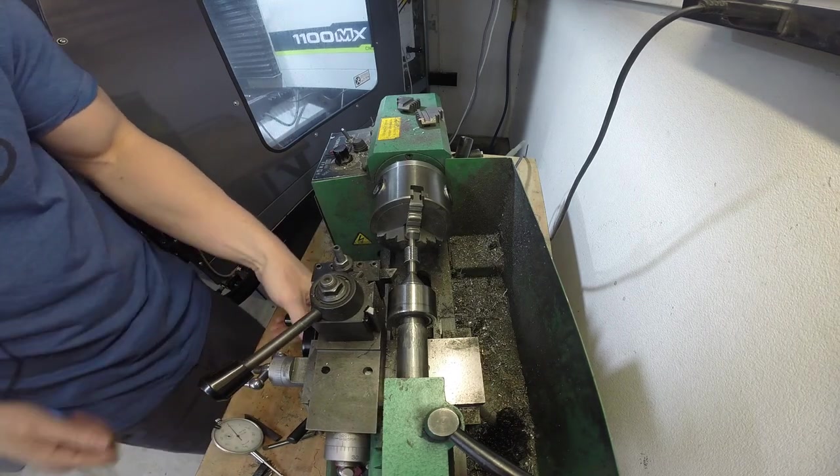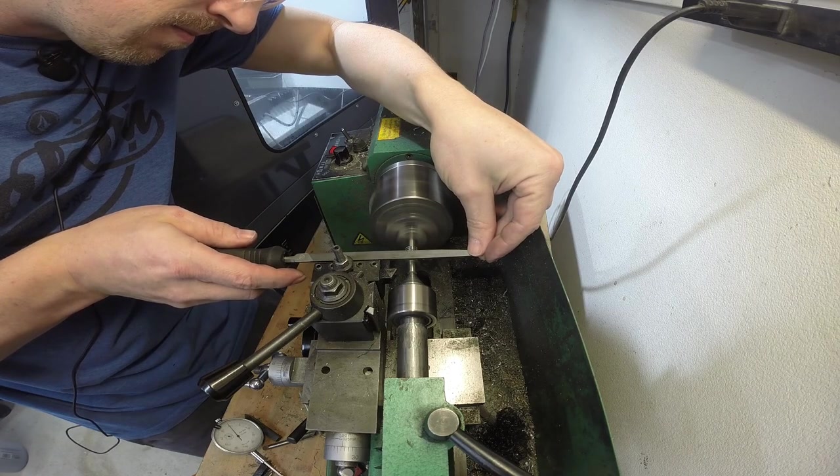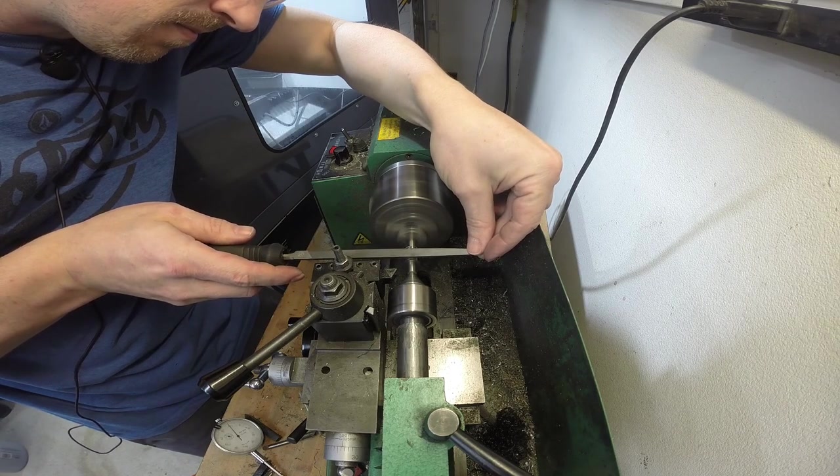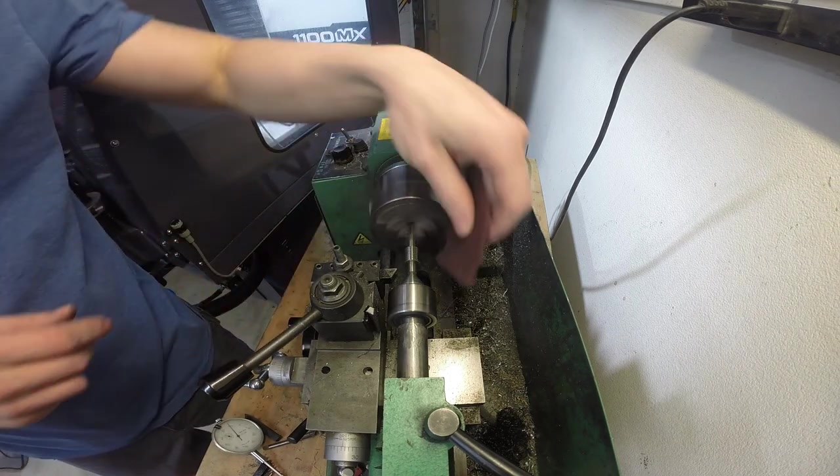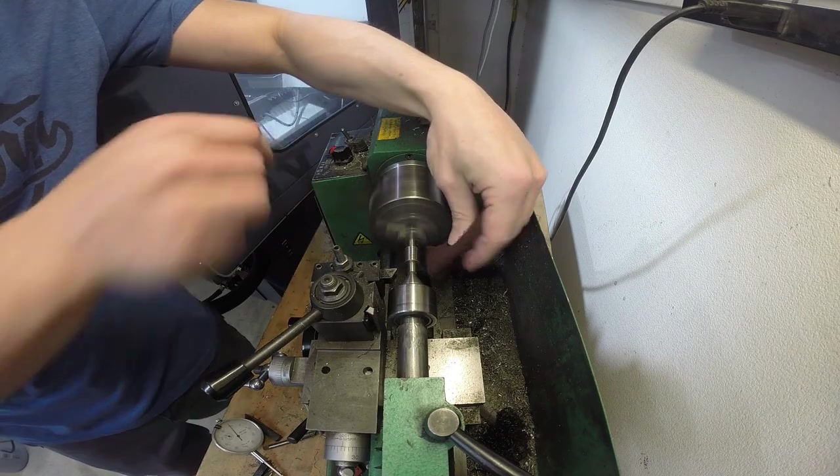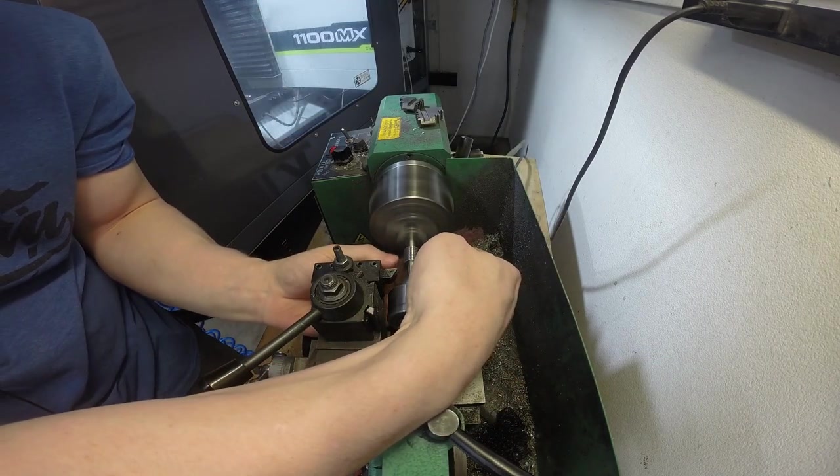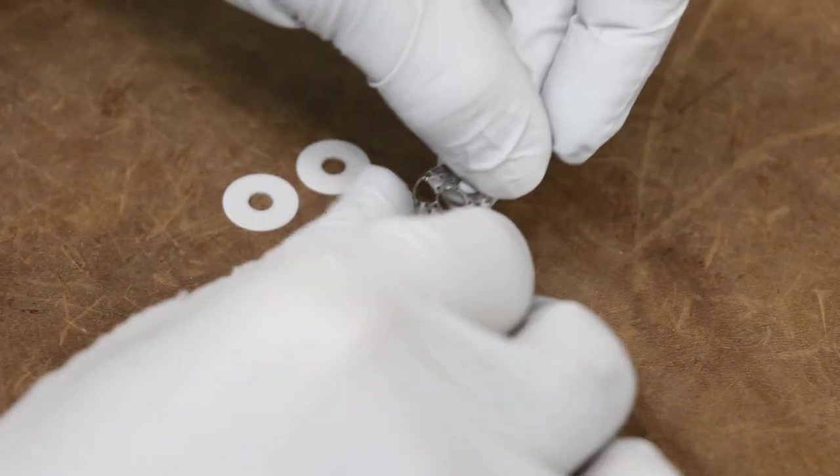That'll allow me to turn the outside diameters and knock off these little tabs from the milling operations. That's about right. Try some scotch brite, see if that gets rid of the little leftover pieces.